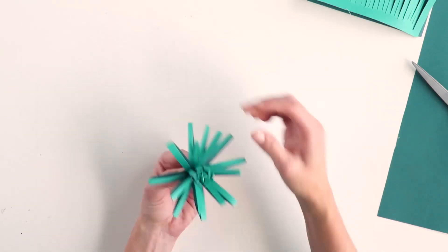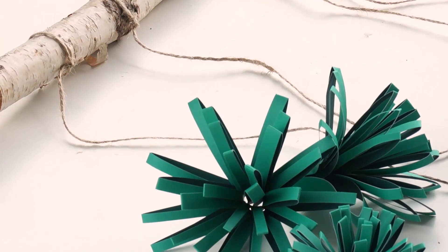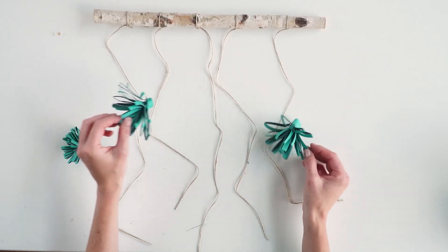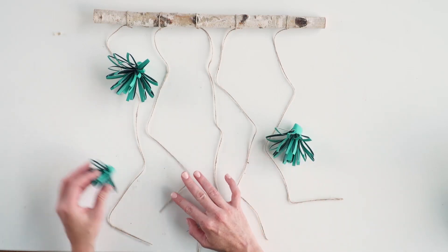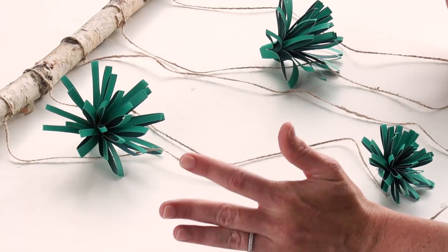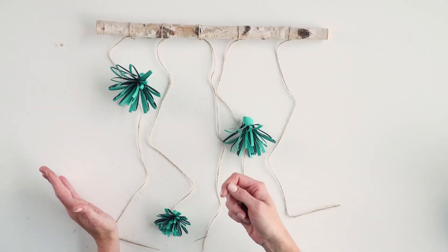When attaching my flowers to my branch and twine, I like to first lay it out. This way, I'm able to visualize how I'm going to like it. Once I've picked the spots that I want it to be in, I can then tie them.